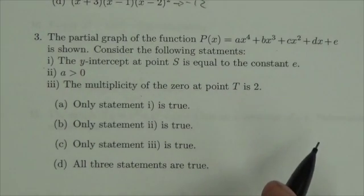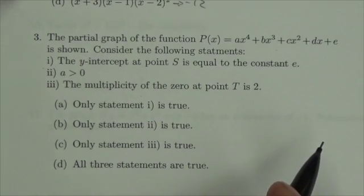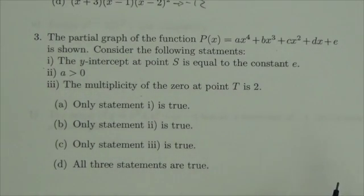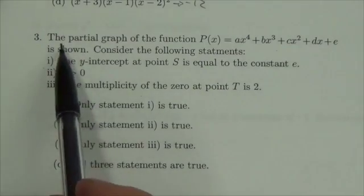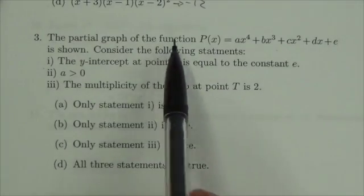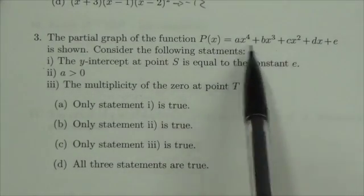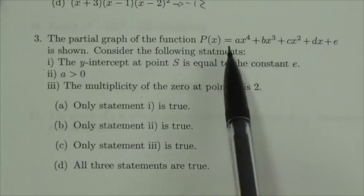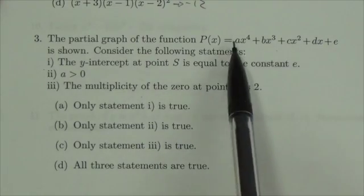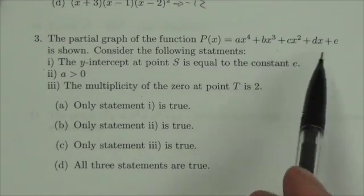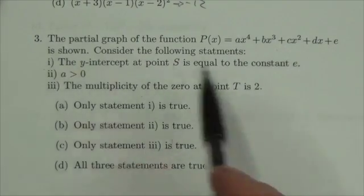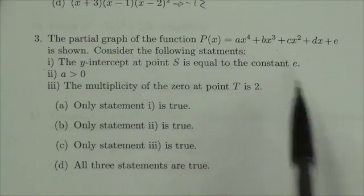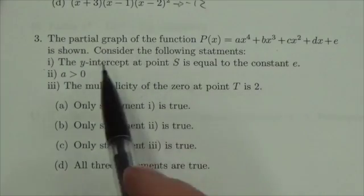Hi everyone. This is Math 30-1, the functions review, multiple choice number three. It says the partial graph of the function is given in general form with all the parameters — it's a quartic. Consider the following statements.